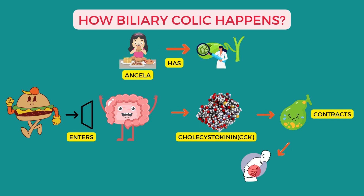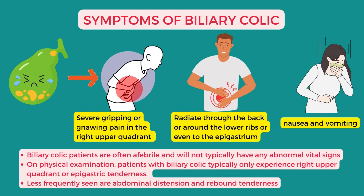The pain is usually referred to the right shoulder. The term 'colic' refers to a patient's regular postprandial pain that comes and goes. A severe gripping or gnawing pain in the right upper quadrant is the most common symptom of biliary colic, and it could radiate through the back, around the lower ribs, or even to the epigastrium.